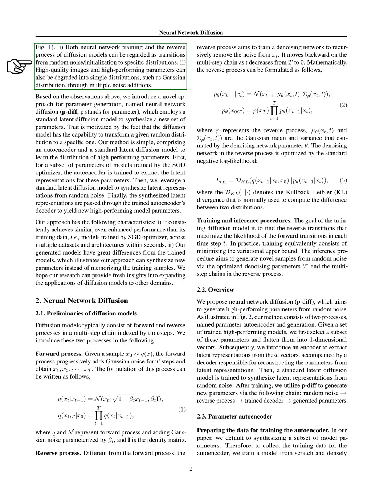Upon examining the similarities between neural network training and diffusion-based image generation, we observed that both processes can be seen as transitions from random noise or initialization to specific distributions.